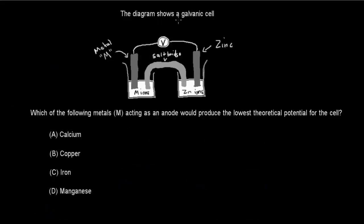The last question: the diagram shows a galvanic cell with metal M and zinc. Which metal M, acting as the anode, will produce the lowest theoretical potential for the cell? A: calcium. B: copper. C: iron. D: manganese. Use the standard reduction potential table to answer.